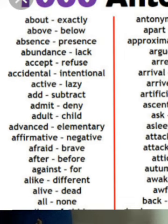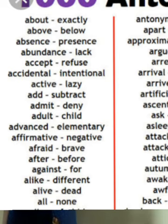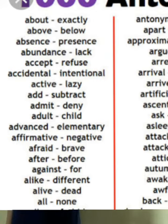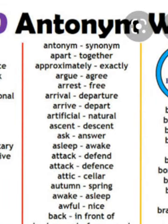Alike — different. Alike means same, so the answer would be different. Next is alive — this one is alive, not alike. Alive — dead. All — none. Antonym — synonym. Apart — together.